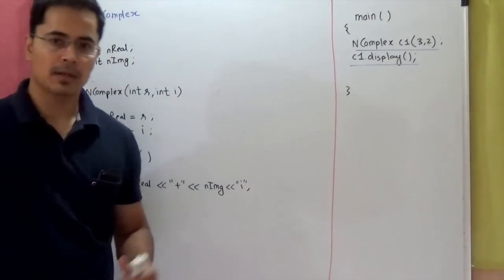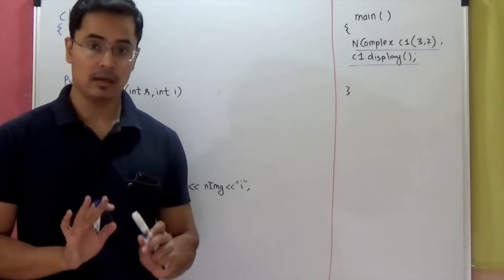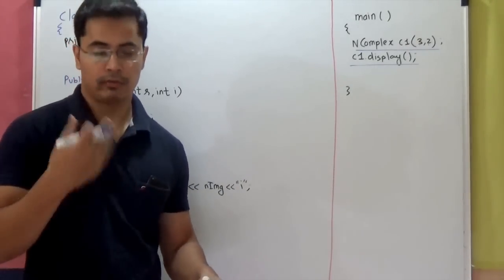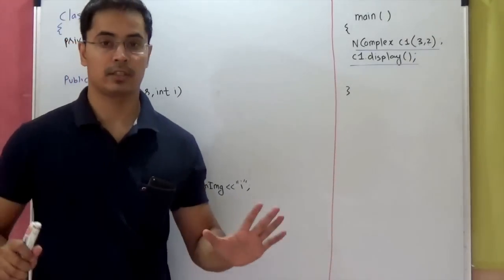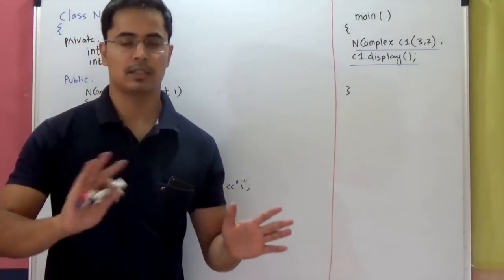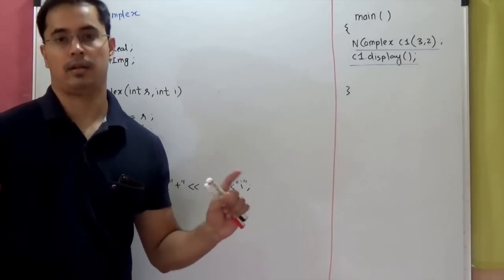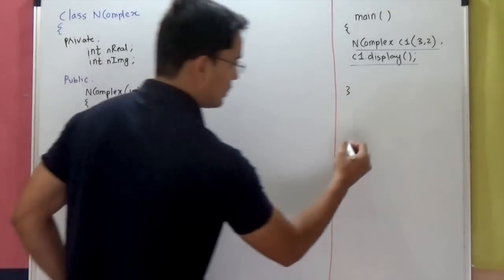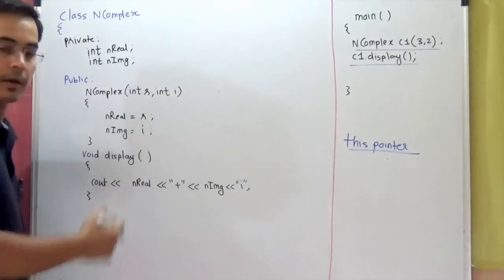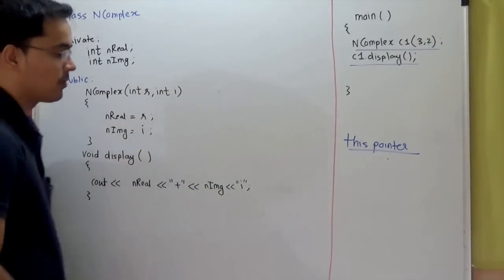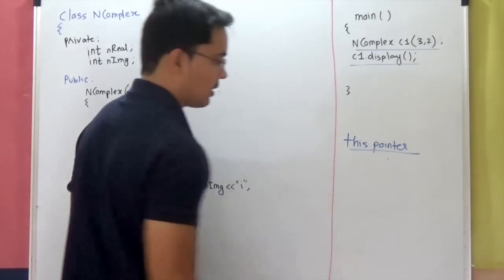But we have removed that for now and maintained one constructor with two integer parameters, which will be used to initialize our data members. So when creating object C1 using this parameterized constructor, 3 and 2 will be assigned to nreal and nimaginary, and we can display it by calling the display function. Now in C++, every member function — barring static member functions — receives a hidden implicit parameter called the this pointer. So all member functions, constructors, except static ones, receive this pointer.